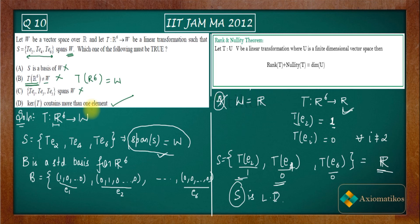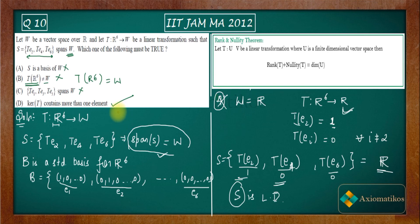In an exam setting, I would always prefer to directly prove option D rather than finding counterexamples, because proving D is straightforward. In this case it turned out easy because the same counter works for both A and C, and B is obviously incorrect — but proving D directly is the most efficient strategy. Thank you.